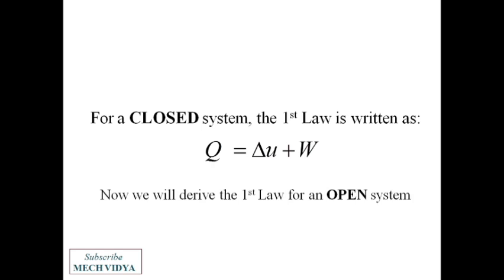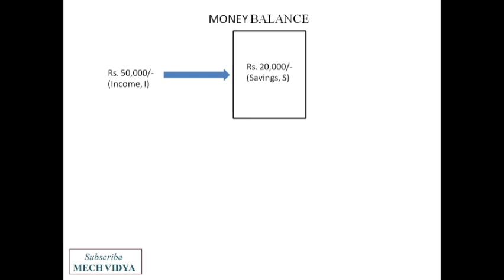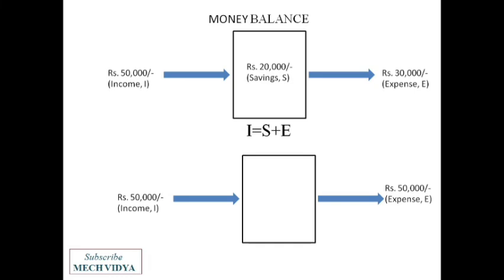Before going into this derivation, let us try to understand a very interesting concept called money balance. It will help you understand this derivation very easily. Suppose this is your bank account and you are earning around 50,000 per month. This is your income, out of which you are saving say 20,000 per month. So what will be left? 30,000 will be left for expense. So if I have to express this mathematically, I can write it as I equals S plus E, that is income equals savings plus expense. Now in this second case, suppose you are not making any kind of savings, your savings is zero. Whatever you are earning, your expenditure is exactly the same. Then in this case, this equation will be very straightforward: I equals E. So once you have understood this, now we will move forward to the derivation.